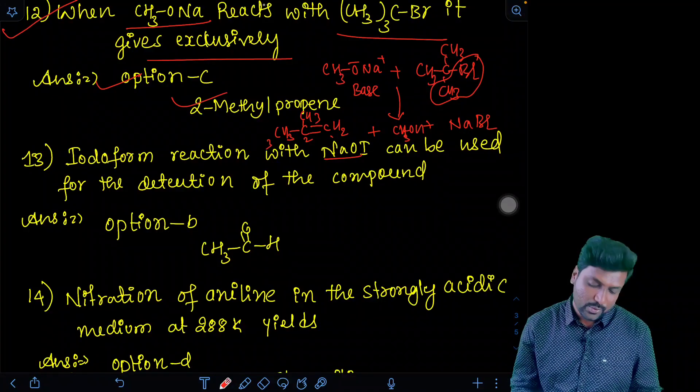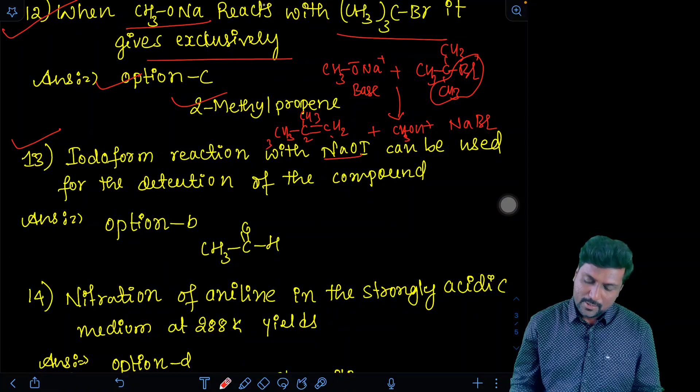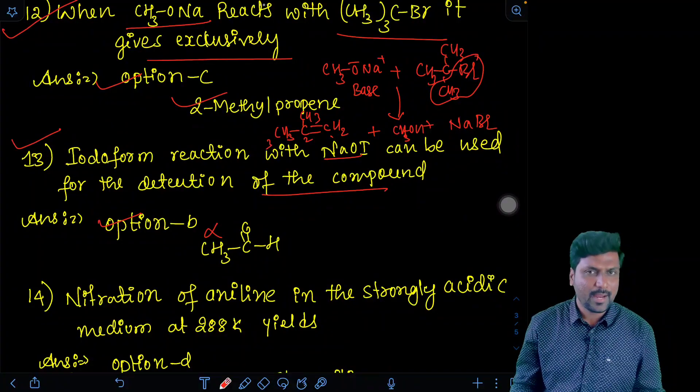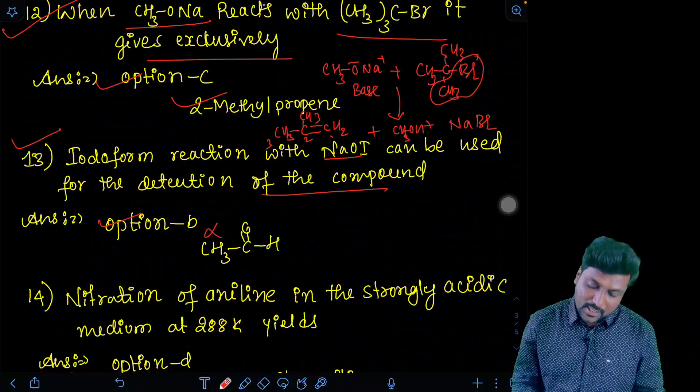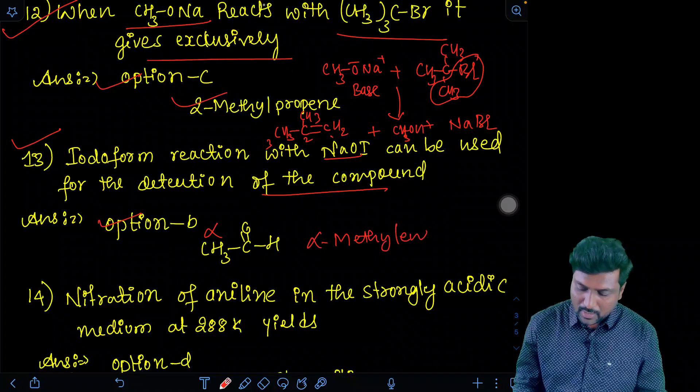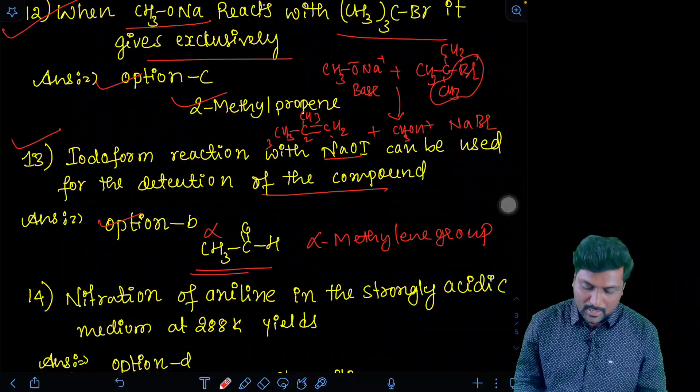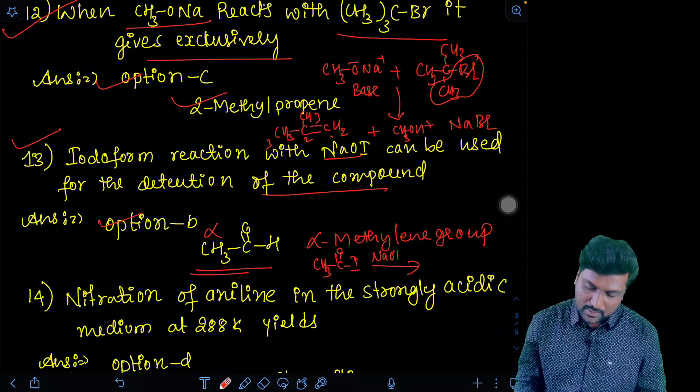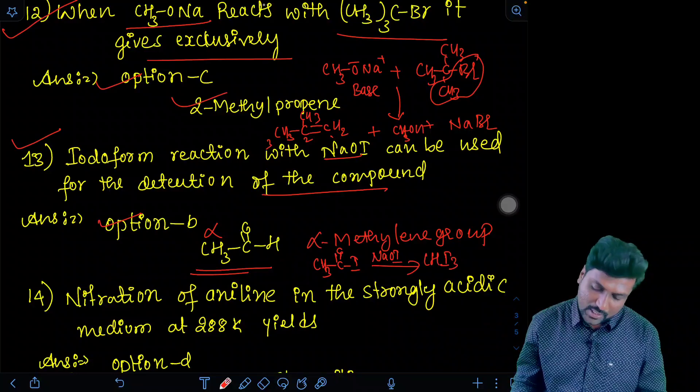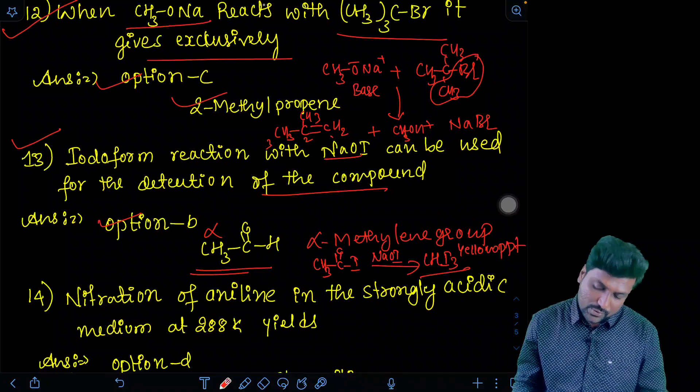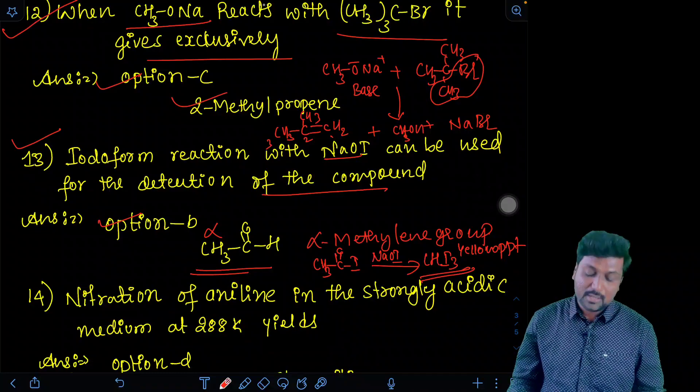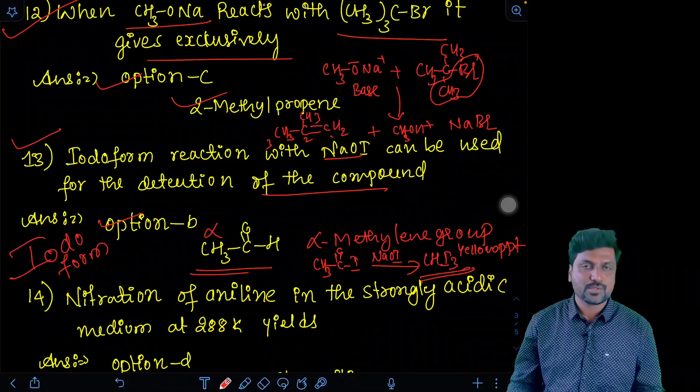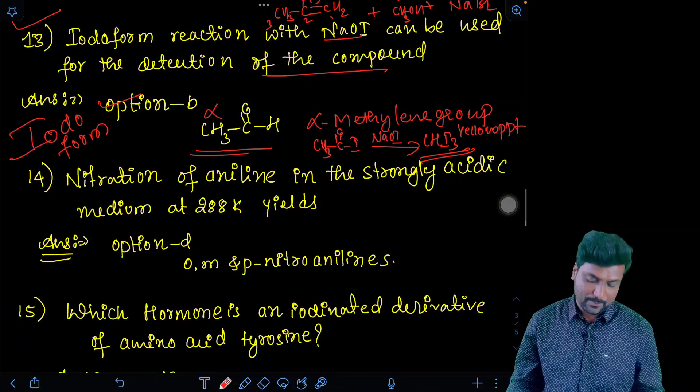Iodoform reaction with sodium hypoiodide. Question number 13. Chapter is aldehyde, ketones and carboxylic acid. Sodium hypoiodide can be used for the detection of the compound - option B answer - that is acetaldehyde. Because acetaldehyde is containing alpha methylene group. It is an iodoform reaction. See, acetaldehyde, ethanol, alpha methylene independent CH3 group. That is, sodium hypoiodide combined will give iodoform, yellow color precipitate CHI3, yellow PPT it will give. Because of that, we can identify acetaldehyde by treating with sodium hypoiodide by producing a yellow color. It is an iodoform reaction. Remember, because of presence of alpha methylene group, it is giving a yellow color with acetaldehyde.